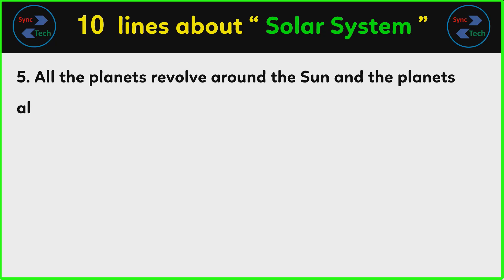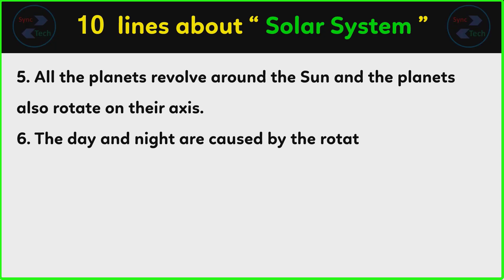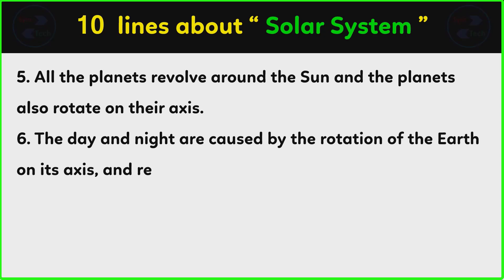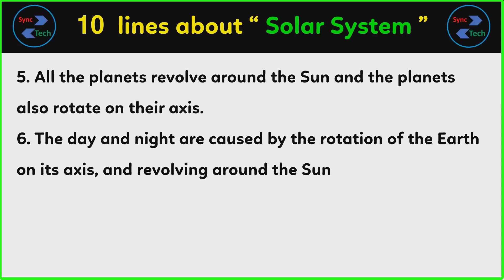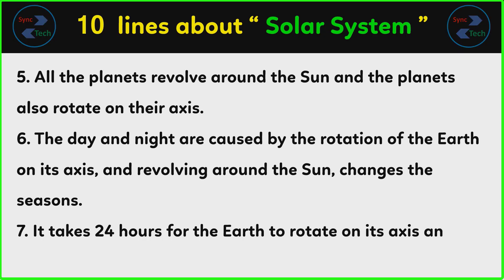The planets also rotate on their own axis. The day and night are caused by the rotation of the Earth on its axis, and revolving around the Sun changes the seasons. It takes 24 hours for the Earth to rotate on its axis.